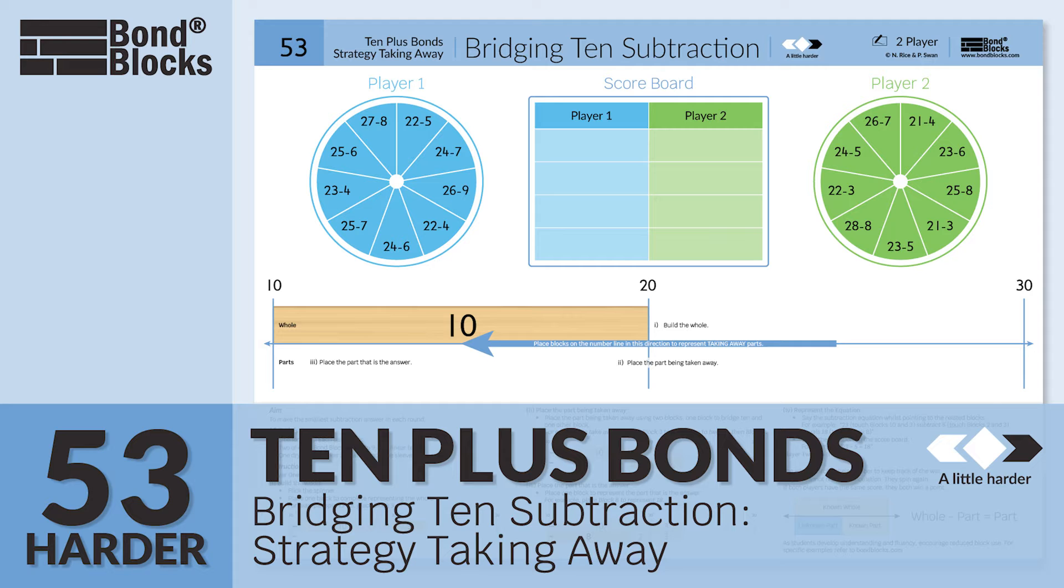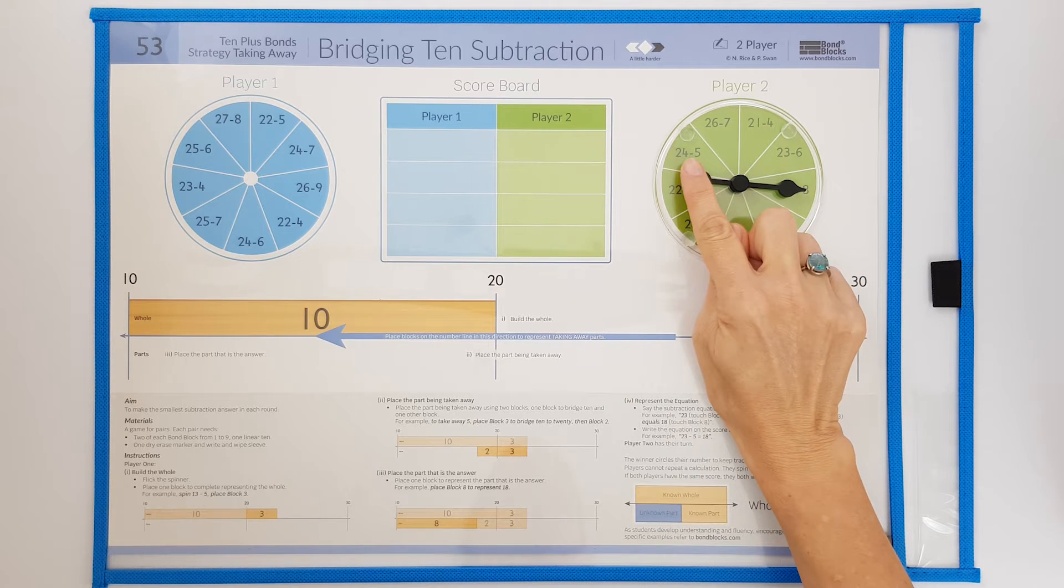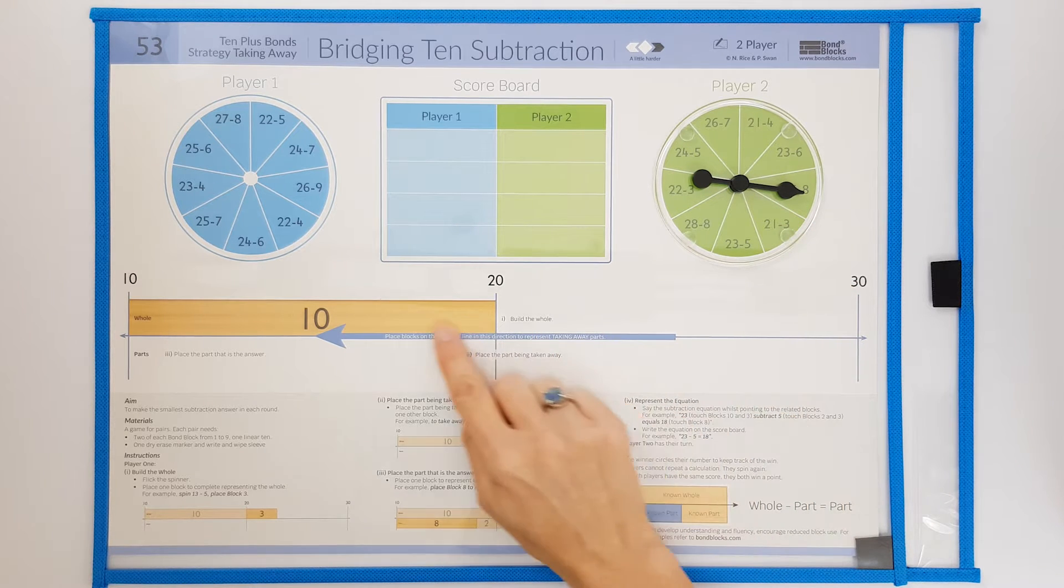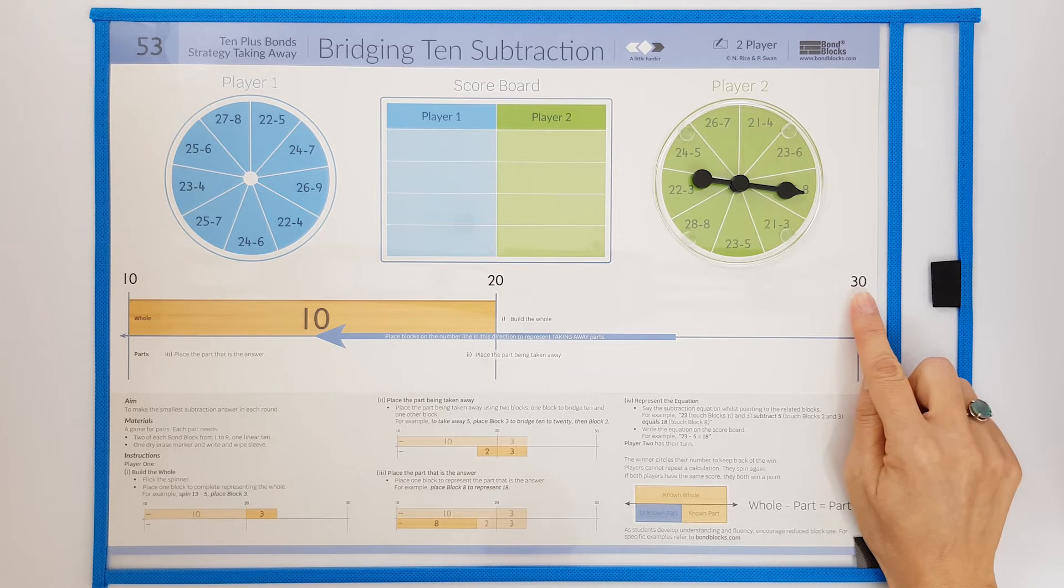Welcome to Activity 53, A Little Harder. In this activity we'll be developing the strategy of bridging 10 for subtraction that's solved by taking away, starting with wholes of less than 30.